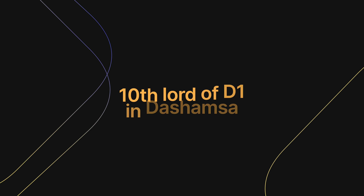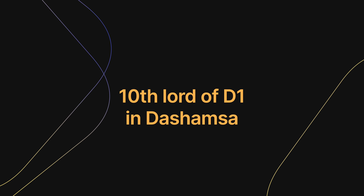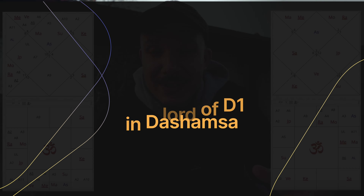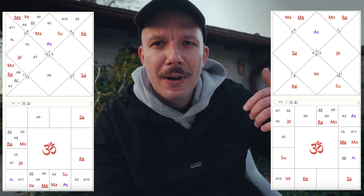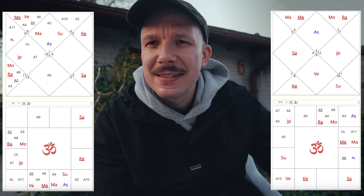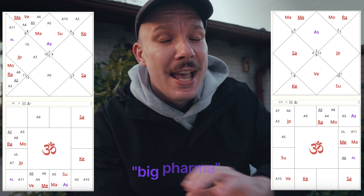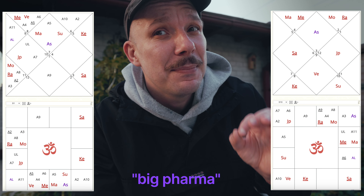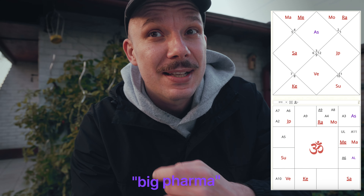What is very interesting — and this is reflected in his 10th Lord from the Rashi chart in the Dashamsa — is that he didn't want to be very much recognized, he didn't want the financial reward. This is against the accusation that scientists are greedy or that it's all for money. He rejected all of this, and this is reflected by the 10th Lord from the Rashi chart in the 12th house in the Dashamsa.